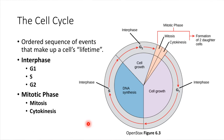During the course of a cell's lifetime, there are a few key things that take place, and they happen in a certain order. This series of events is called the cell cycle.